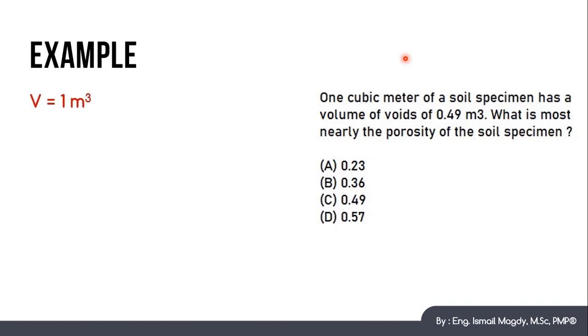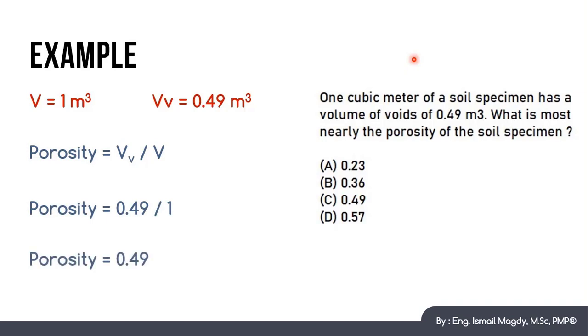This is a direct question because we have the volume of 1 m cube and we have the volume of voids which is 0.49 m cube. And we know that porosity equals Vv over V. So this is very direct. It will be 0.49 over 1 which is 0.49. So the answer will be C, 0.49.